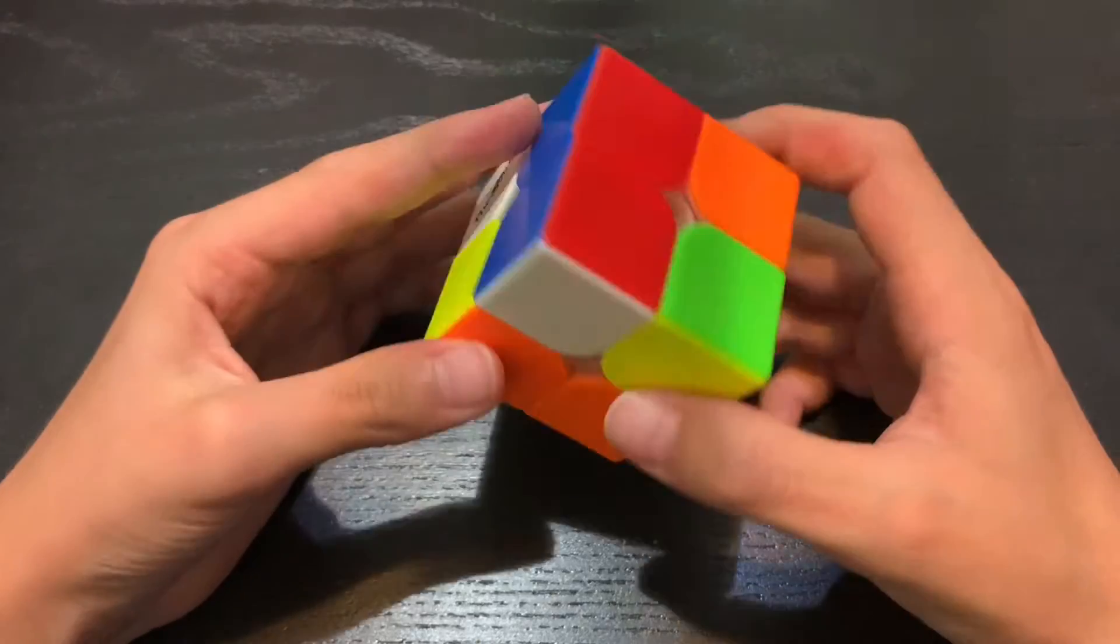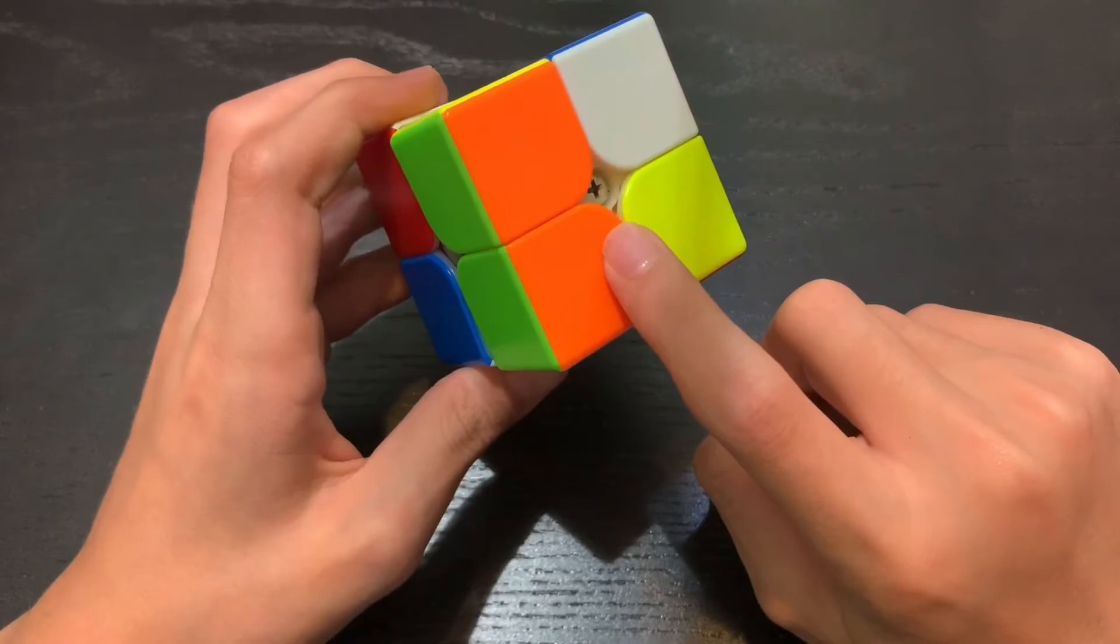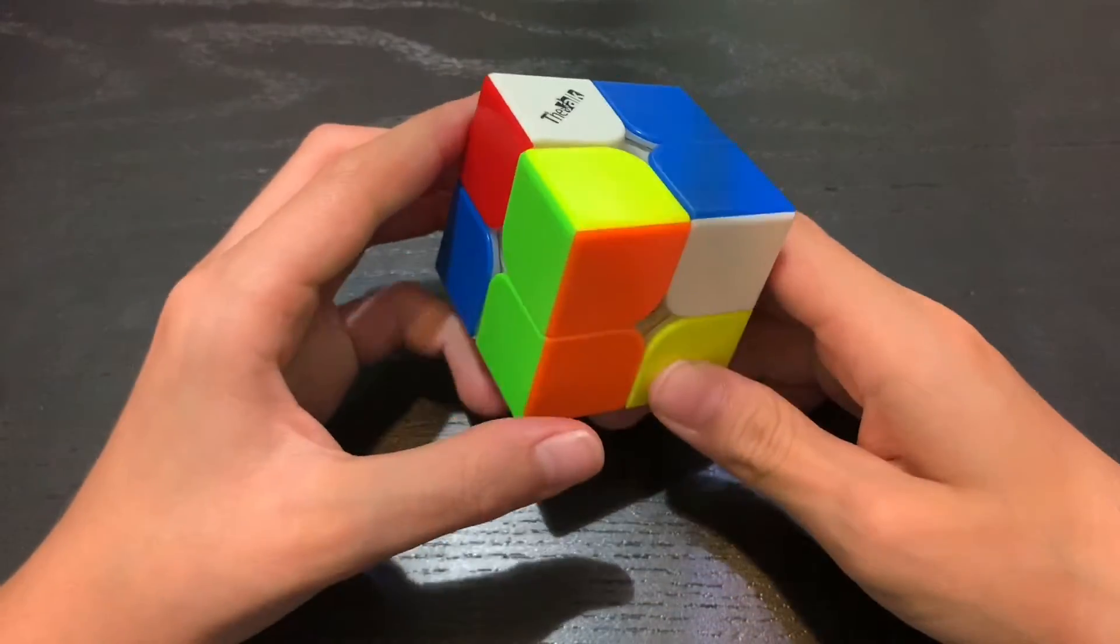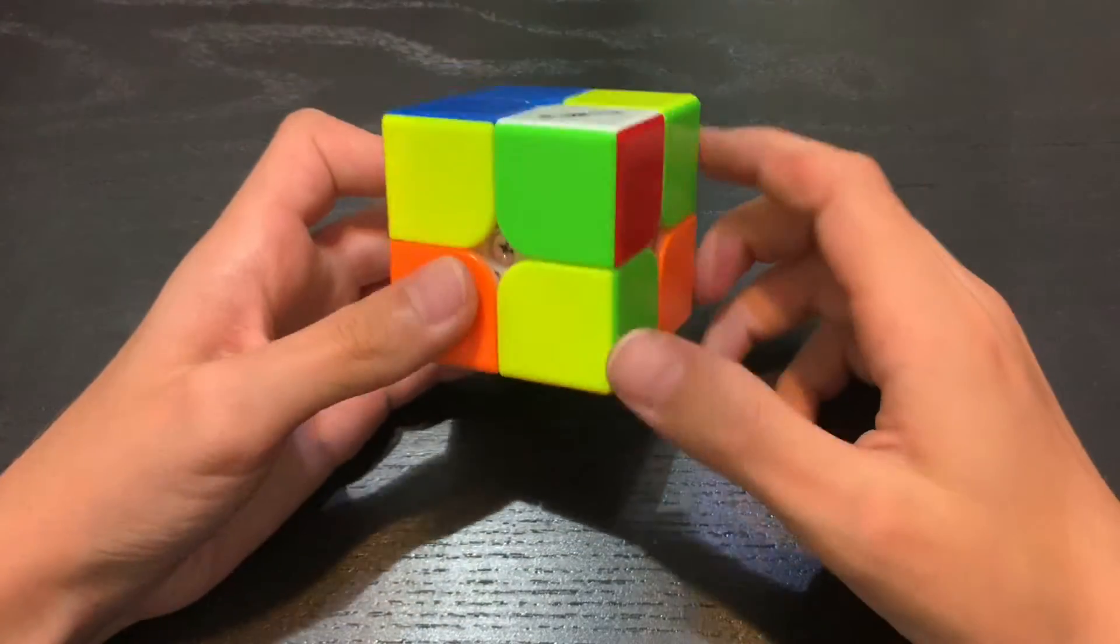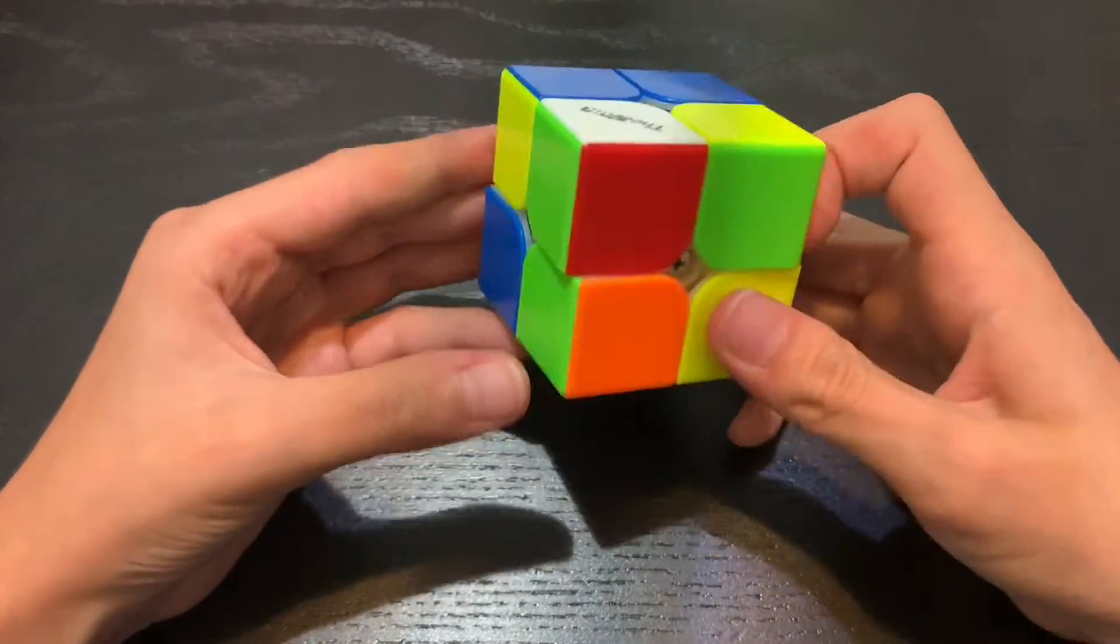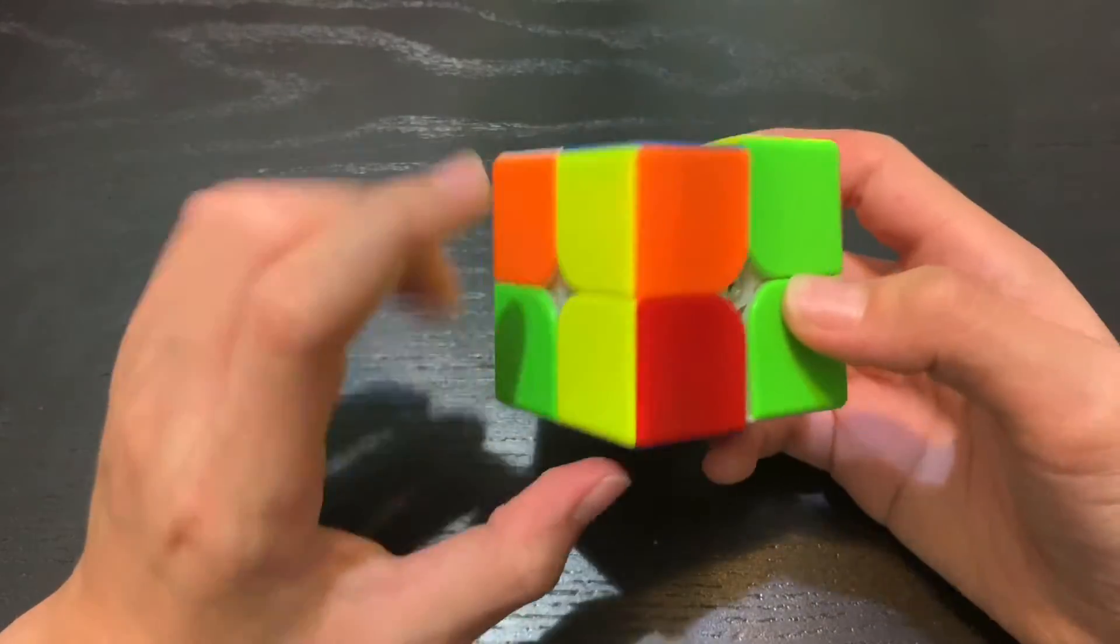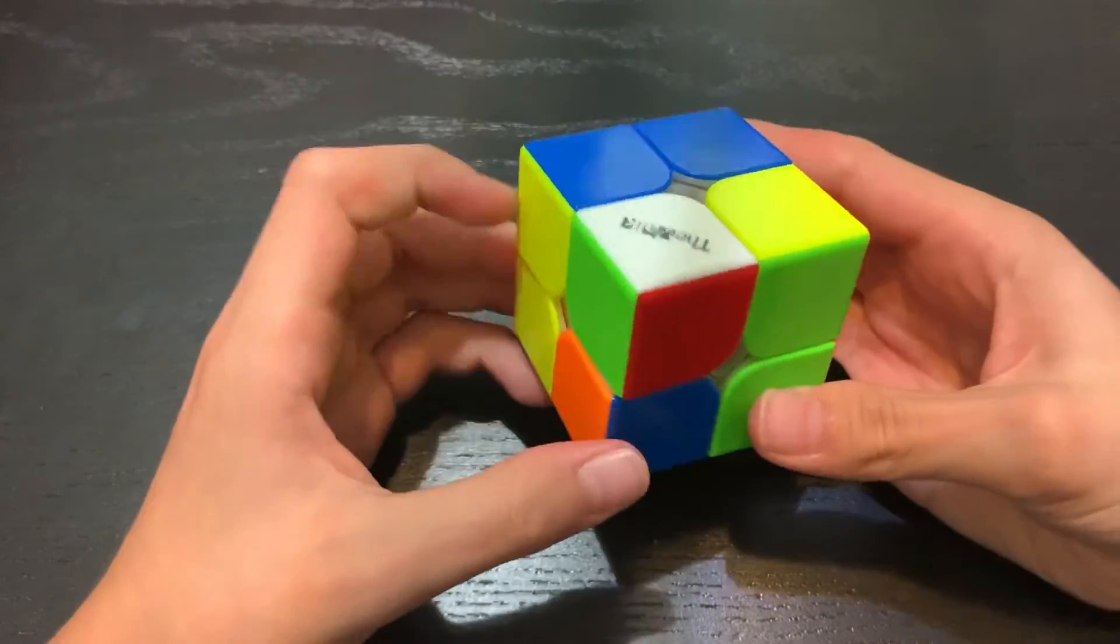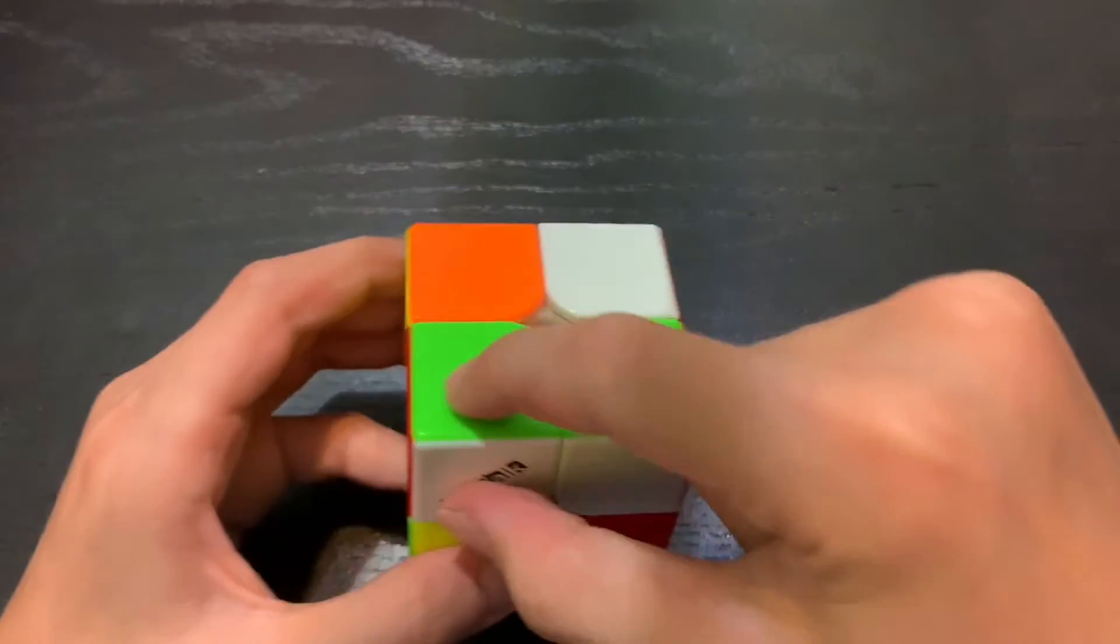So now first I'll choose the starting piece. I'm going to start with white, orange, and green. Any other pieces that are the same, I have this piece. To insert this, you couldn't just do that because it would be in the wrong place. So for this one, you just turn it that way and bring it down. That solves this block.